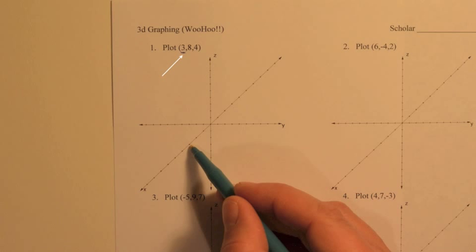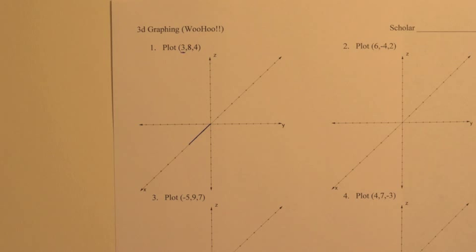So 3 refers to the x-coordinate. And since it's positive, we're moving 3 forward, in other words, towards you, if you were to kind of look at this in perspective. So there's 3.